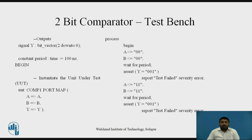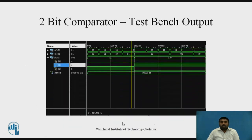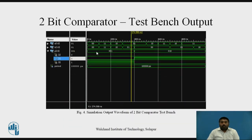Once we have written all the conditions — here I have shown two sample cases but you have to write all the cases — then we end the process with 'end process', and then end the architecture with 'end architecture'. This completes the test bench for the 2-bit comparator. Once done, you can go for the simulation and verify with the simulation output.